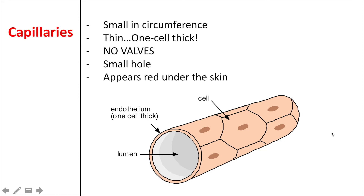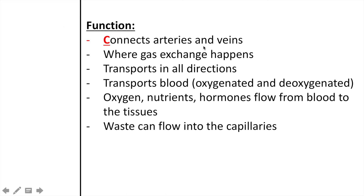Capillaries are the third category of blood vessels. They are smaller in circumference, thin, and only one cell thick. They have no valves, and their lumen is very small. Under the skin, capillaries appear red, similar to arteries, only smaller. The function of capillaries is to connect the arteries and veins. Gas exchange happens within the capillaries — they can transport blood in all directions, carrying both oxygenated and deoxygenated blood, oxygen, nutrients, and hormones from the blood to the tissues. They also transport waste that eventually gets expelled through the lungs or skin.